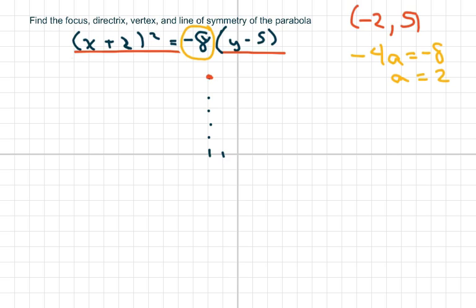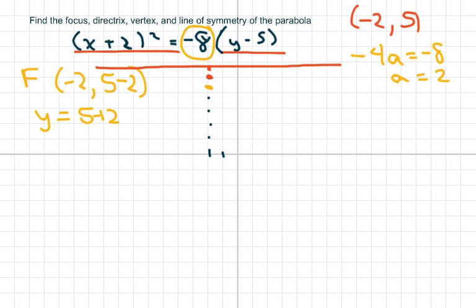And so therefore, all you're going to do is take your focus and we're going to subtract it - 5 minus 2 to get the focus here. And your directrix is just going to be y equals 5 plus 2.